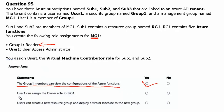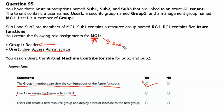Statement 2: User1 can assign the Owner role on Resource Group1. Since User1 has User Access Administrator permission on Management Group1, which includes Subscription1 and its Resource Group1, User1 can definitely assign other users the Owner role for Resource Group1. The answer is YES.